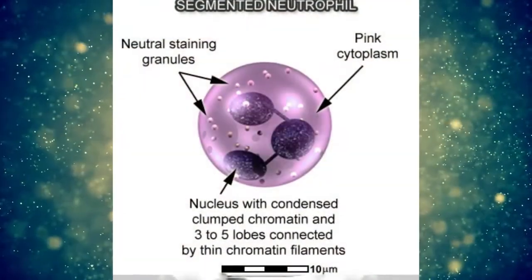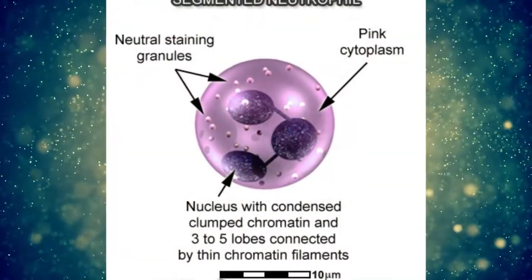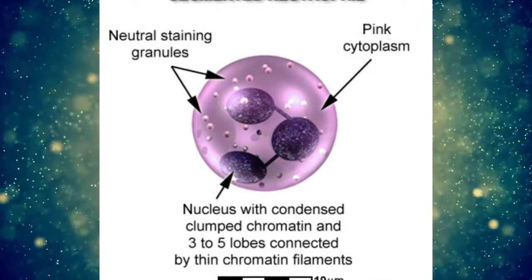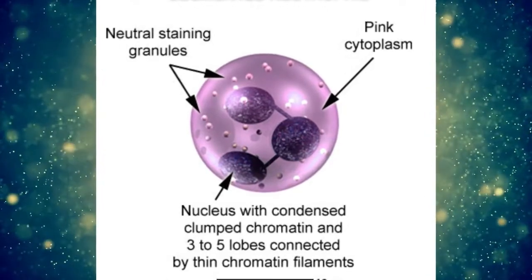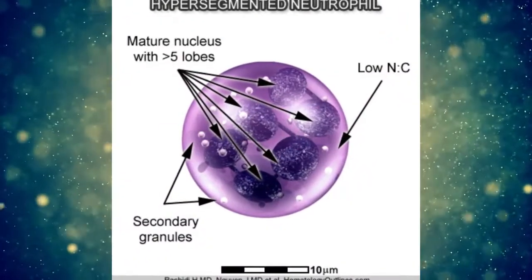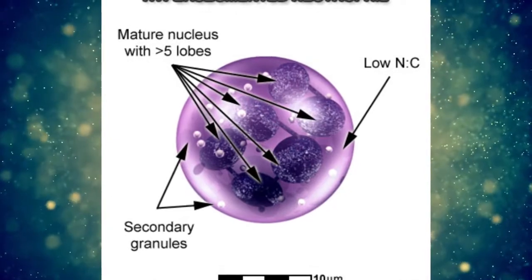Normally, neutrophils only contain 3 to 5 nuclear lobes, and they are connected by thin chromatin fibers. But hyper-segmented neutrophils contain 6 or more lobes.